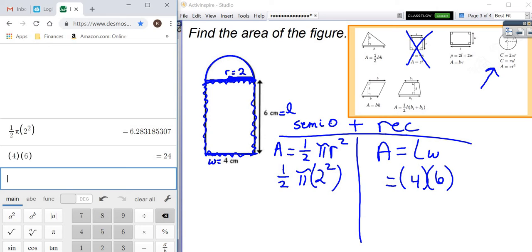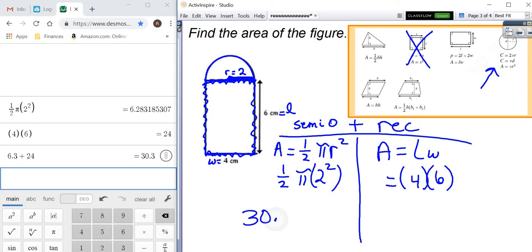So now I just have to add them together. 6.3 plus 24 gives me 30.3 centimeters squared is the area for the entire figure, the semicircle plus that rectangle. It's amazing, isn't it?